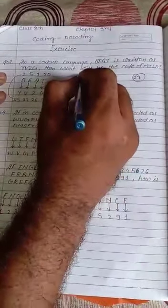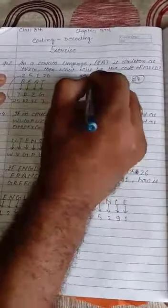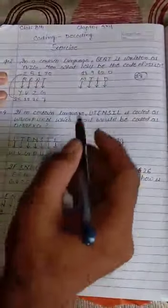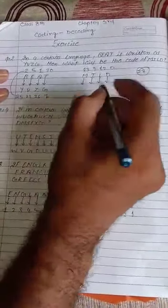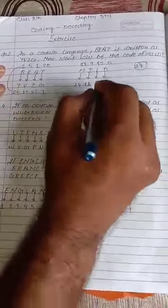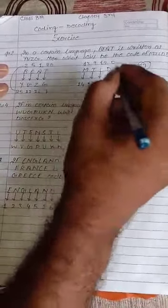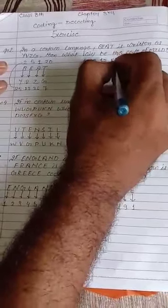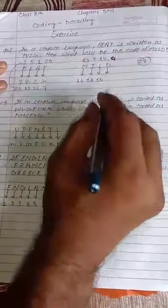The position of M is 13, I is 9, L is 12, D is 4. So what should be added to 13 to make 27? It will be 14. Similarly, to 9 we'll add 18, to 12 we'll add 15, and D has a position of 4, so to 4 we'll add 23.